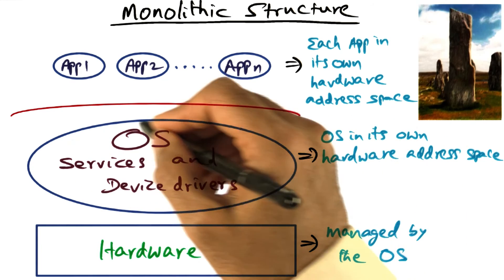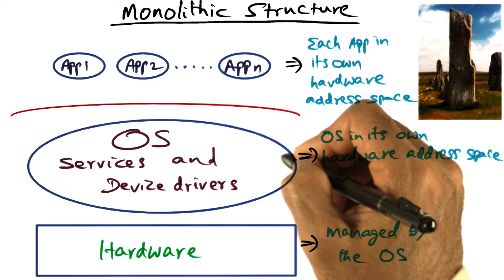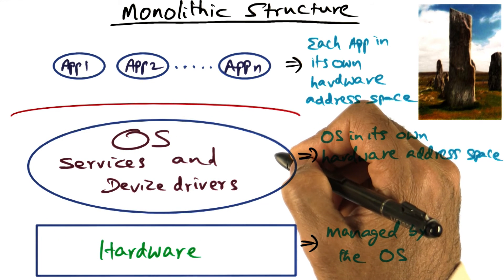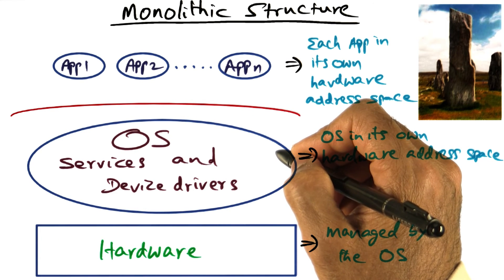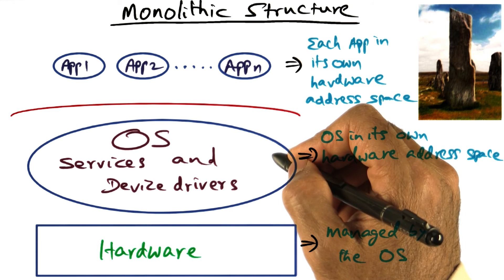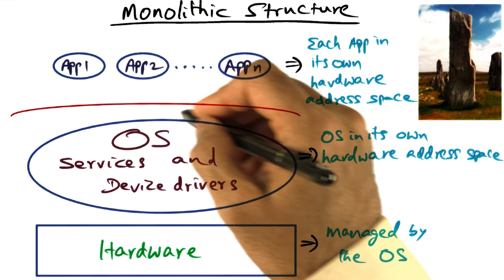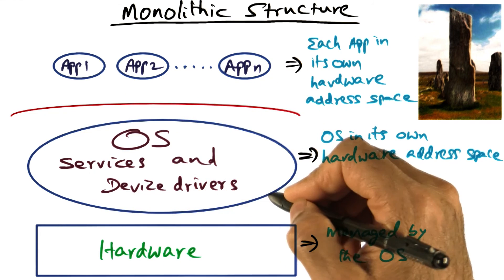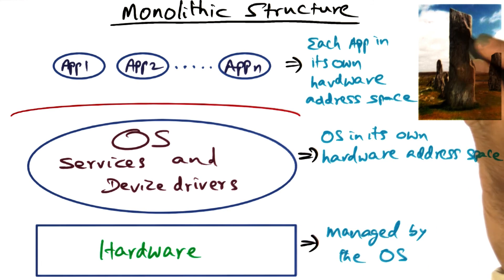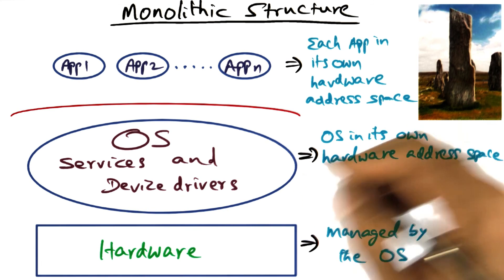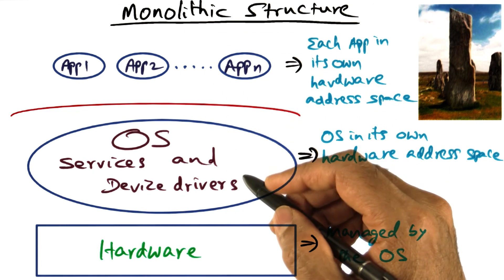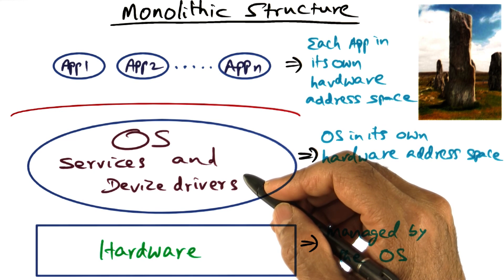Note that all of the services expected of the operating system — file system, memory management, CPU scheduling, network, and so on — are all contained in this one big blob. And that is the reason it is also sometimes referred to as the monolithic structure of an operating system.